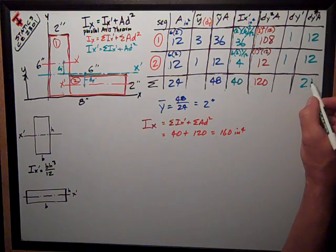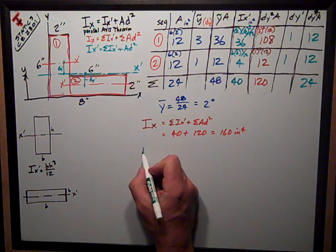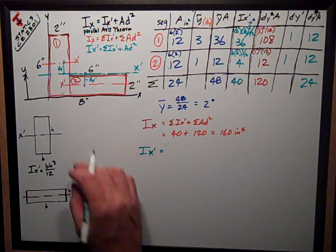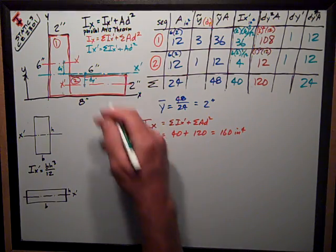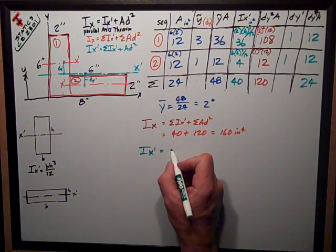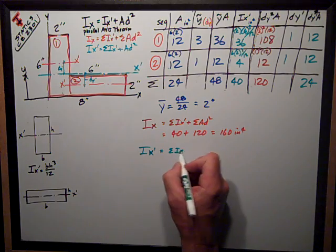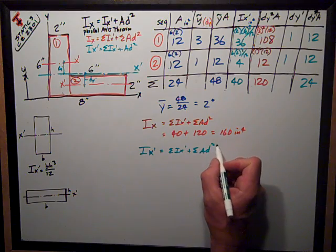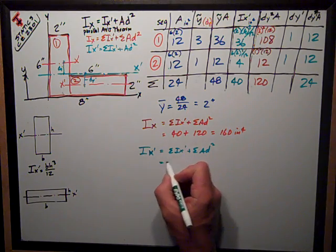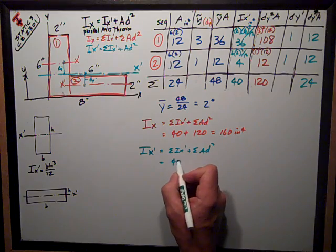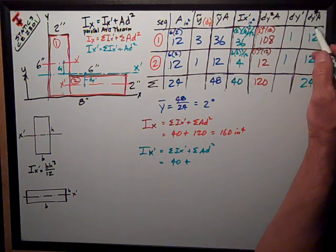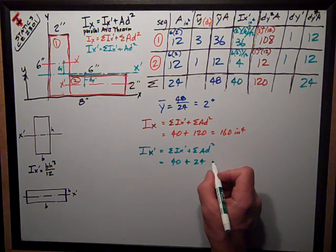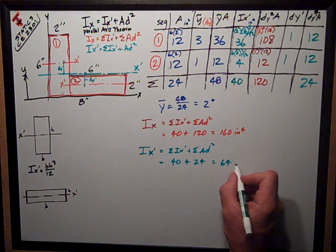Add those two up and I can state that ix-prime, the moment of inertia of the composite section, about its own centroidal axis, x-prime, is equal to the sum of ix-primes plus the sum of the ad squared terms, which is a different d, so it makes this number different. But the sum of the ix-primes is the same, forty, plus this d squared y term, twenty-four, is equal to sixty-four inches to the fourth.